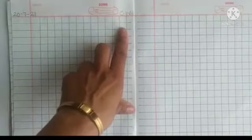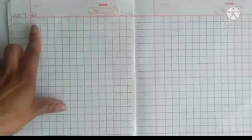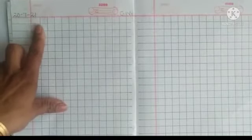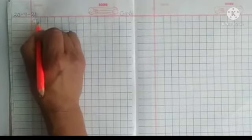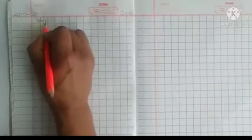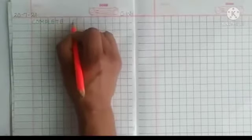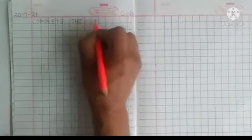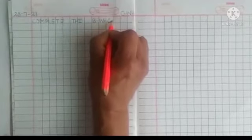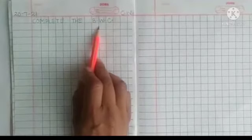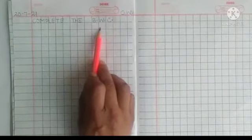On the right side of the page, as usual you have to write C.W., which means classwork. Here we have to write our heading, and the heading is: Complete the B.W.C., which is the short form of backward counting. So our heading is: Complete the backward counting.